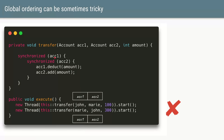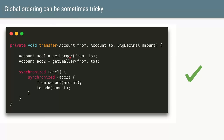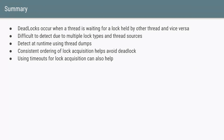Even though the code consistently says 'account one' and 'account two', the actual objects can be different at different times. The solution is to use a method that determines which account number is larger, assign the larger one to account one and the smaller to account two. This way, locking account one first and account two second is always consistent regardless of which values are passed in.